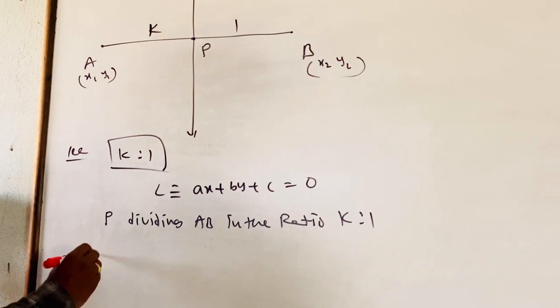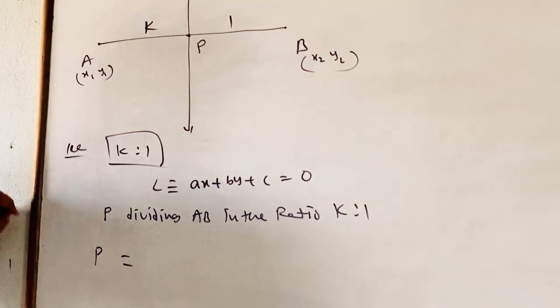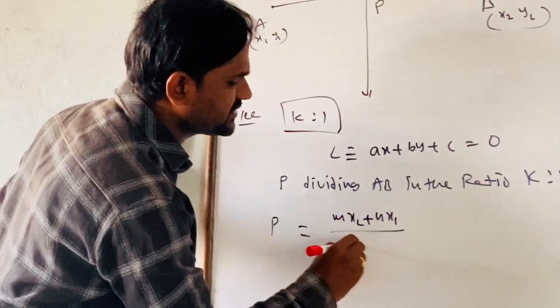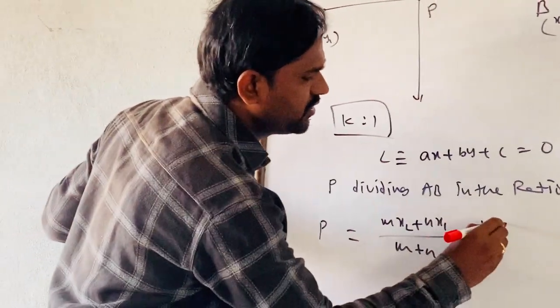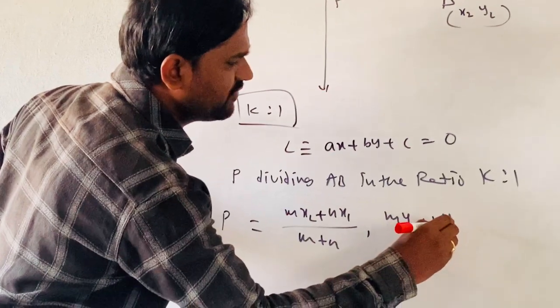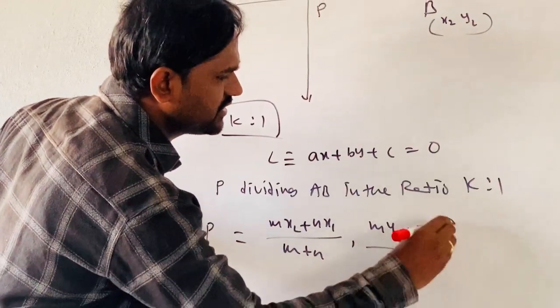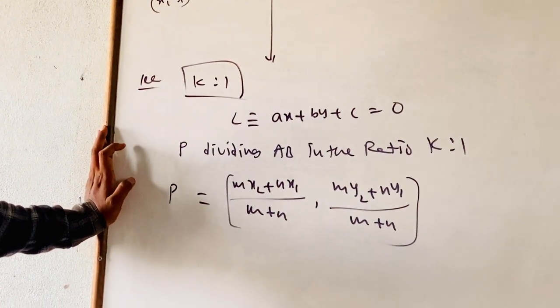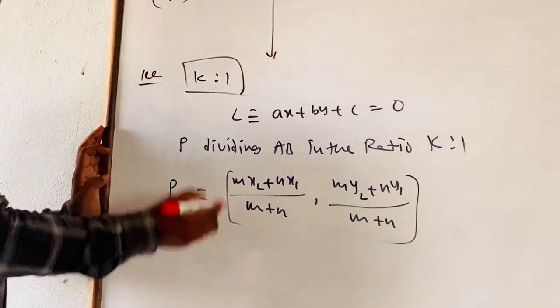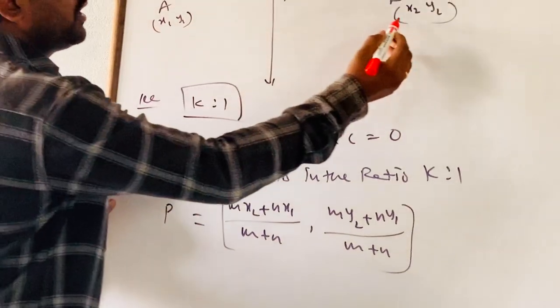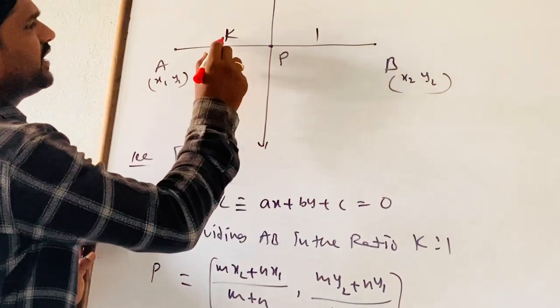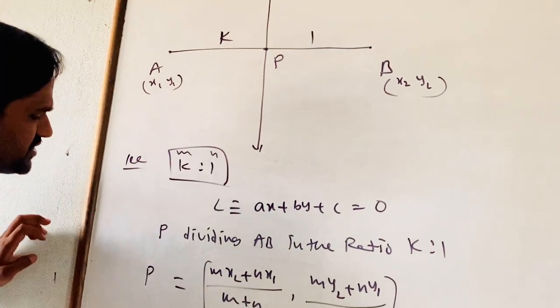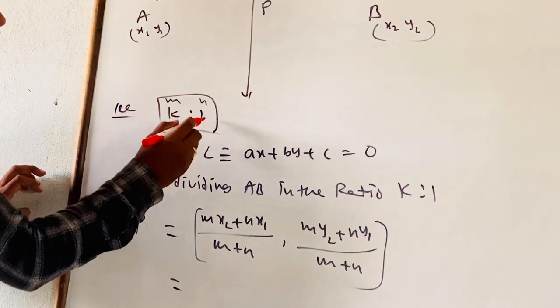We have the formula: coordinates of P equal (MX2 plus NX1)/(M plus N), (MY2 plus NY1)/(M plus N). This is the section formula which we discussed in previous classes. Here I am substituting: M is K, N is 1.